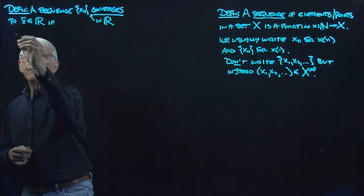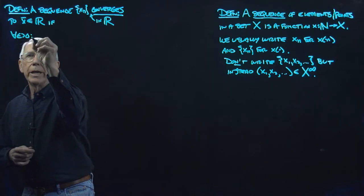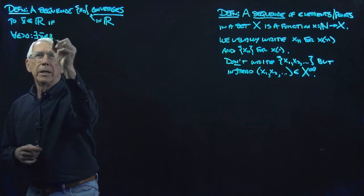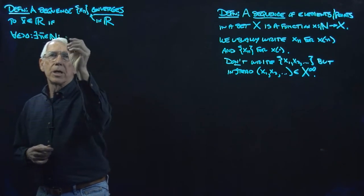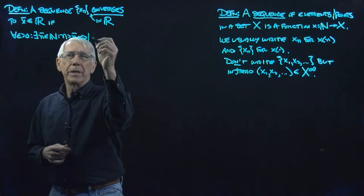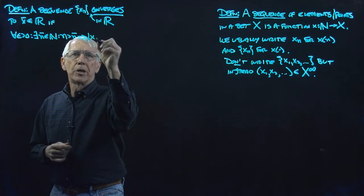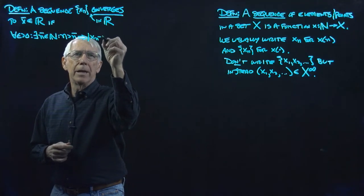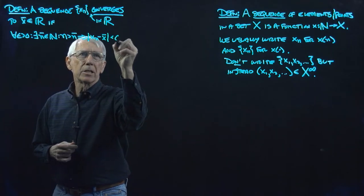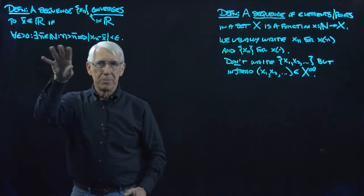...for every epsilon greater than zero, there exists an N̄ in N such that n greater than N̄ implies that the distance between term x_n and the number x̄ is less than epsilon.